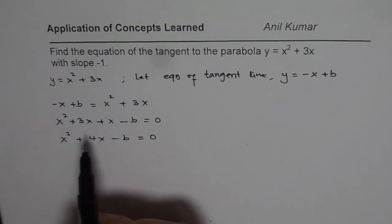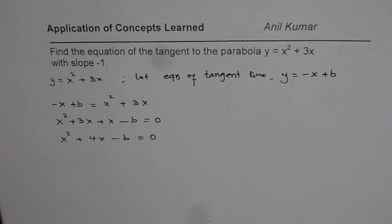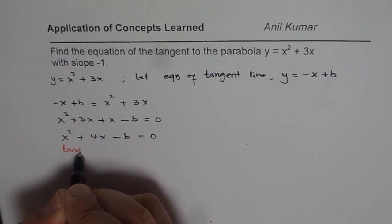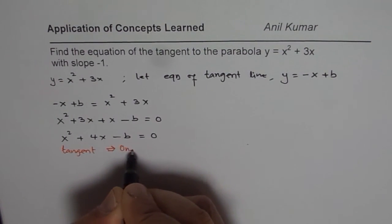Well, if we are looking for a tangent, then we have only one solution to this equation. That means, if you are looking for a tangent, so for tangent, there has to be just one solution, is it okay?